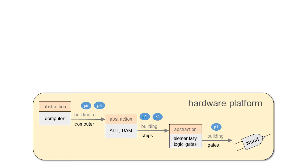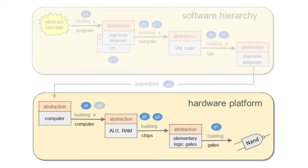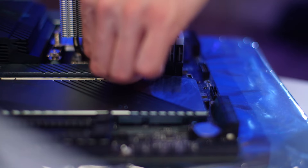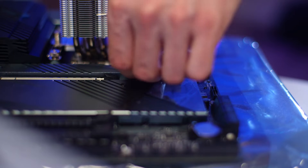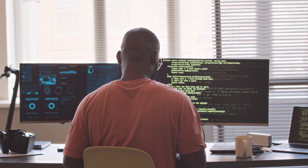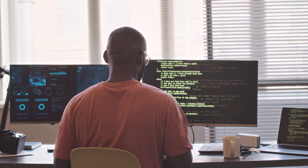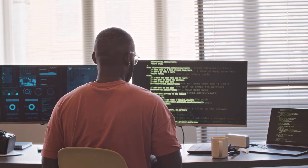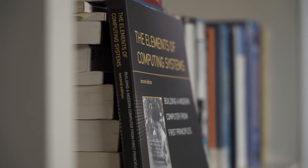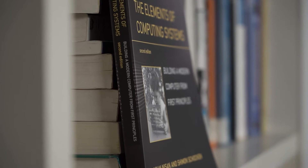Transitioning from hardware to software, each of the 12 projects in the course embodies the NAND to Tetris philosophy: the seamless interplay of abstraction and implementation. With every project, new modules are constructed using abstract building blocks from the level below.